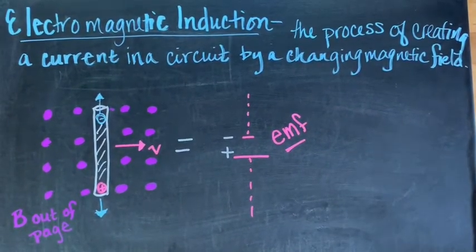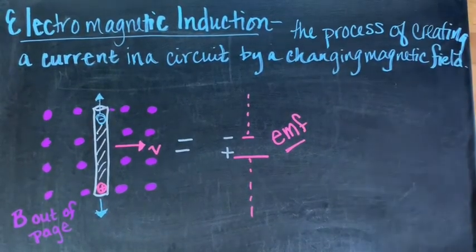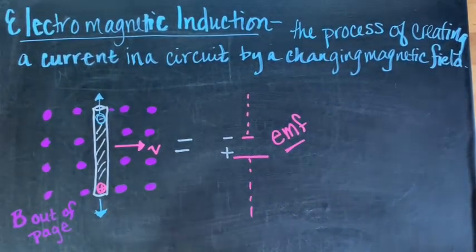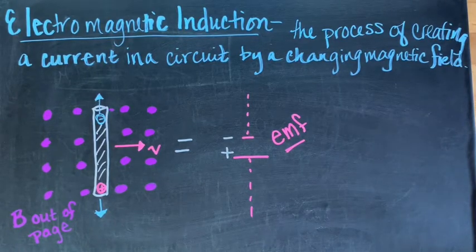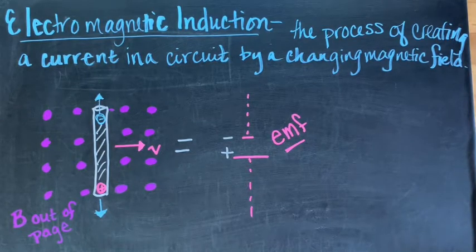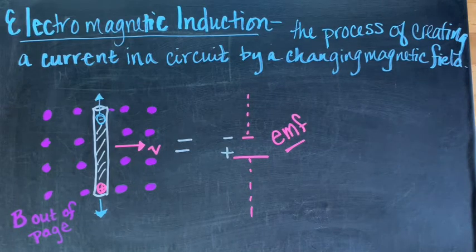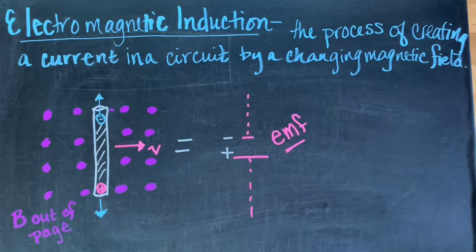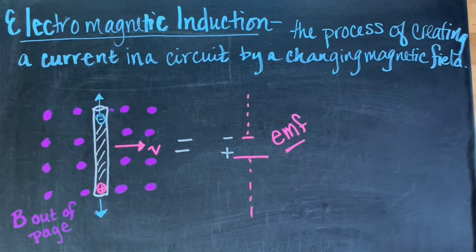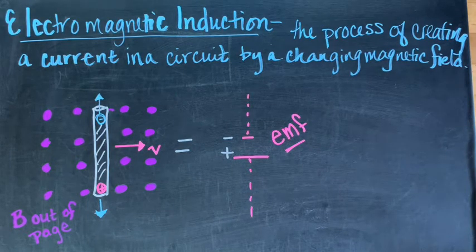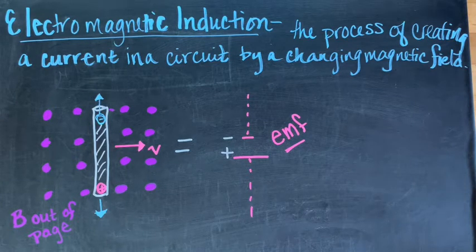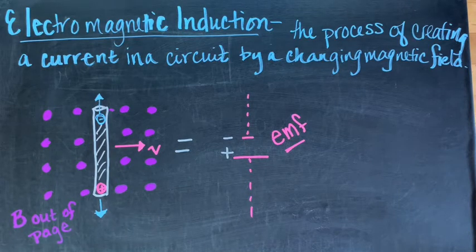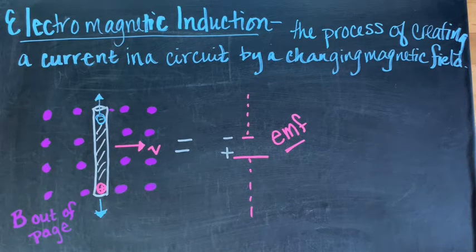Chapter 20 is on electromagnetic induction and how electricity and magnetism are really two halves of the same force. The reason they're so similar is they are highly related and you can create a current by moving or by changing a magnetic field. So electromagnetic induction is the process of creating a current in a circuit by a changing magnetic field.